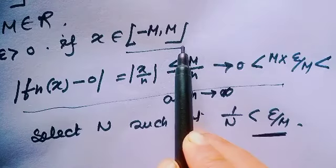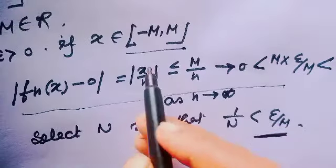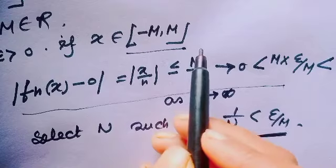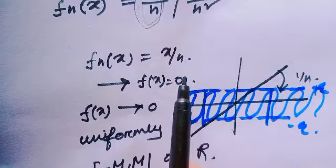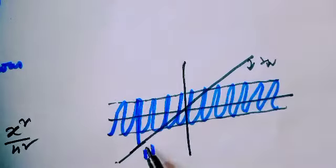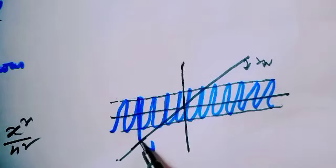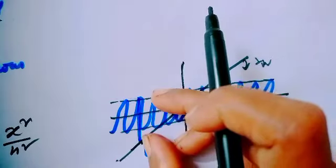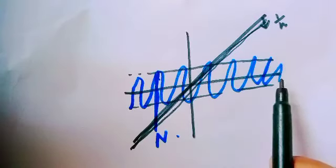But the question is: if fn is uniformly convergent on every closed bounded interval, does that imply fn is uniformly convergent on the whole real line? Notice the graph — for large N, the line does not lie entirely within the epsilon-neighborhood. The whole line does not remain inside this neighborhood.